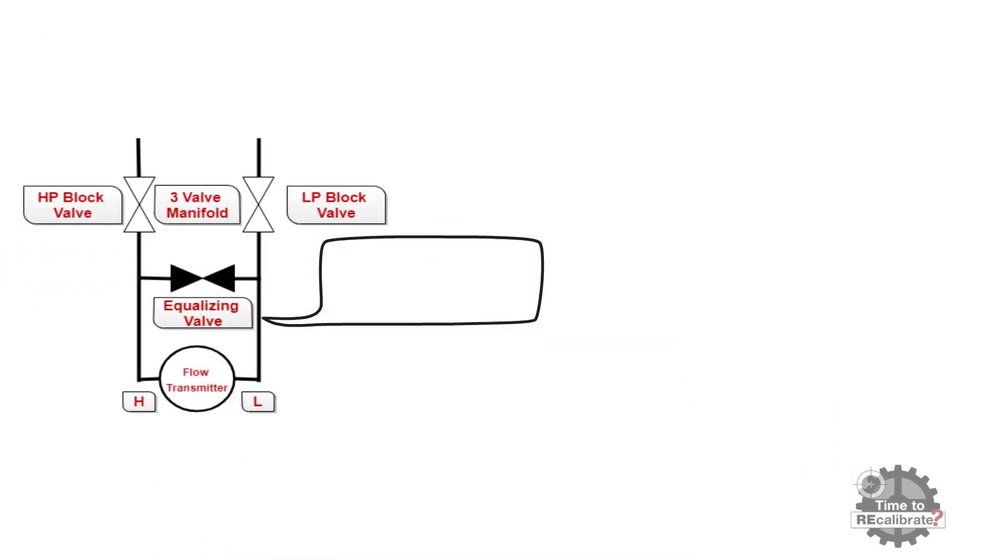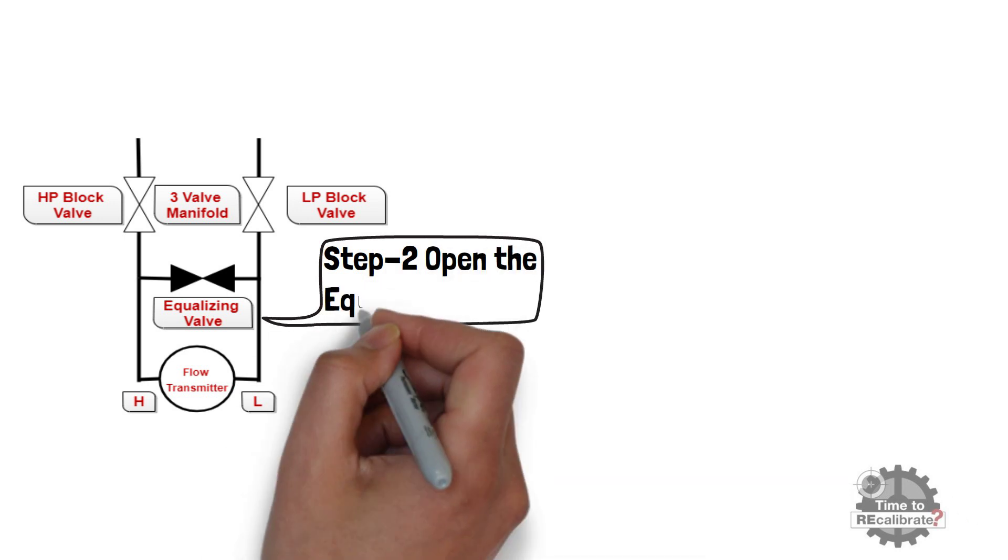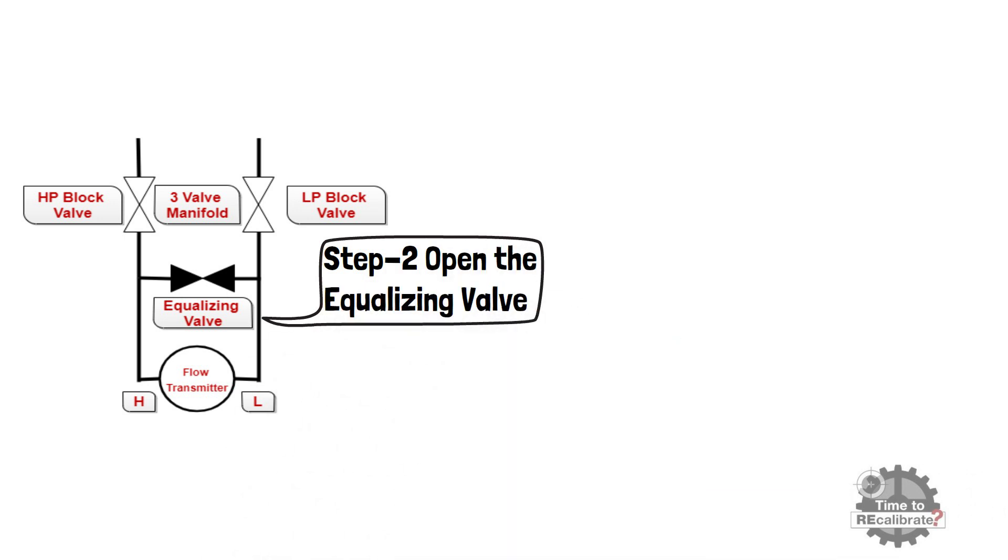In second step, open the equalizing valve by rotating valve in counterclockwise direction. This will balance the pressure to both the high and low sides of the transmitter.